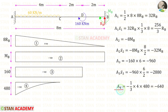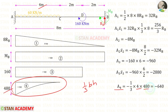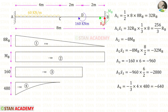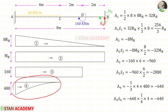Now let us find Area 4. It is a second degree parabola. The area formula is 1/3 × base × height. Here the breadth is 4 and the height is 480. We know it is negative, so Area 4 = minus 640. For Area 4 × x̄₄, the centroid distance of this parabola towards the left is 1/4 × breadth. Here the breadth is 4, so it is 1/4 × 4 = 1. For Area 4 × x̄₄, we get minus 640.